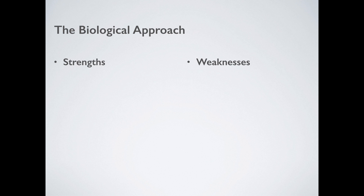In terms of strengths and weaknesses, one of the key factors when thinking about the biological approach is that it's very scientific. This approach is very much based in the laboratory, so we can control for variables, produce reliable research, and get the same results time and time again. This is an excellent way of showing cause and effect relationships — if we change one thing, what effect does it have on behaviour, particularly with our animal models? This biological approach also has a multitude of applications, the main one being our understanding of mental illness and abnormal psychology.